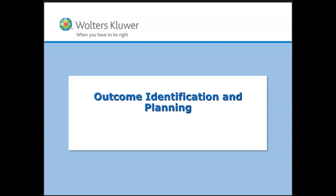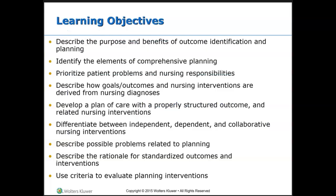This is the chapter on outcome identification and planning. Here are the learning objectives for this chapter — please take a moment to review each one, review the key terms at the beginning of the chapter, and do NCLEX questions and rationales at the end.